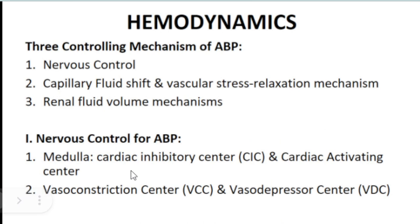Blood pressure is controlled by three mechanisms: nervous control, capillary fluid shift, and renal fluid volume mechanisms. For nervous control, the medulla oblongata is the vasomotor center, integrating all cardiovascular regulation. It has two parts: the cardiac inhibitory center (CIC) — which activates the parasympathetic system — and the cardiac activating center (CAC) — which activates the sympathetic nervous system.